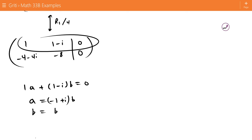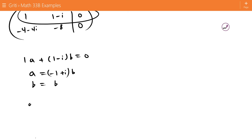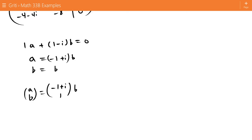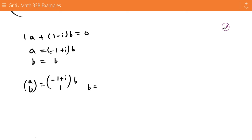This tells us that A equals negative 1 plus i times B, and we know B equals B, so that means the vector AB equals negative 1 plus i and 1 times B. We can define B to be 1.